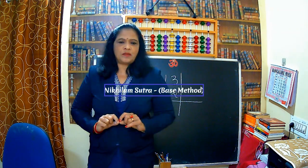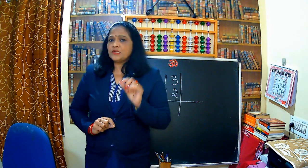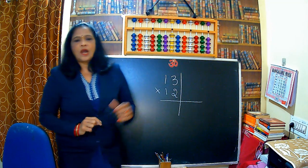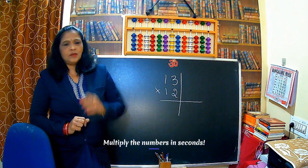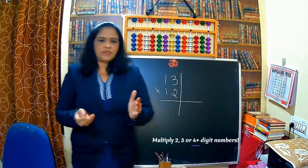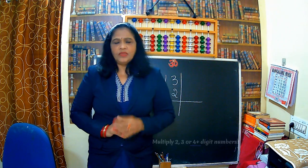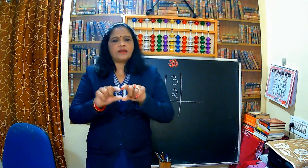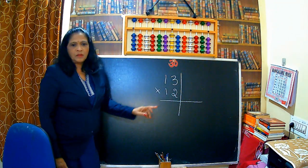It's also called the base method. By using this base method, how can we multiply numbers in seconds? It may be two-digit numbers, three-digit numbers, or it may be four or more than that. In one line we can write the answer.